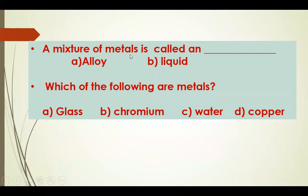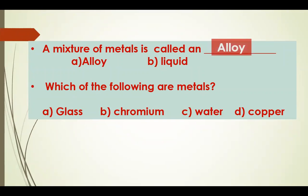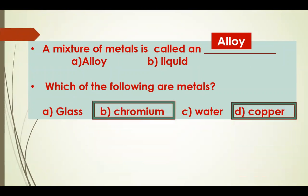A mixture of metals is called a dash. Options: Alloy, Liquid. Which of the following are metals? Options: Glass, Chromium, Water, Copper. Choose the right answer. The first answer is Alloy — a mixture of metals is called an alloy. Chromium and Copper are metals.